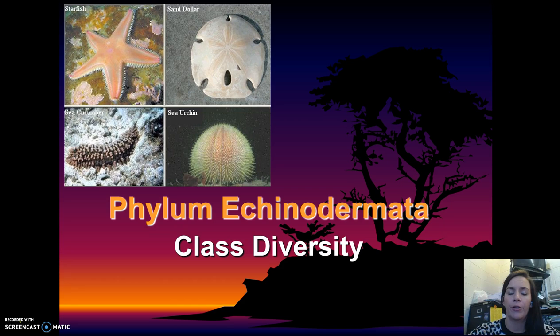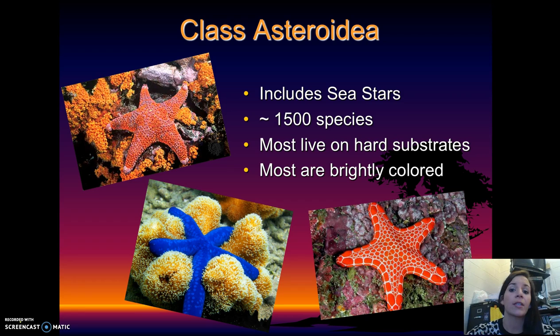Welcome to your second set of video notes on Echinoderms. This set of video notes is going to focus on class diversity, so all the different types of organisms that are classified as Echinoderms. We're going to start out with class Asteroidea. These include sea stars, and there are roughly 1500 species of these.